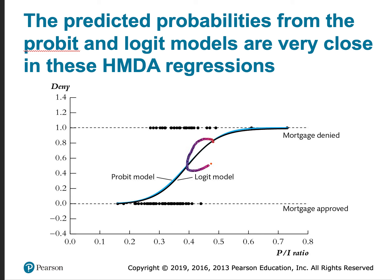They're quite close in this domain of the payment to income ratio. And then probit seems to lie just above the logit over here again. But they're really quite close, very closely connected in their predictions that an applicant will be denied.